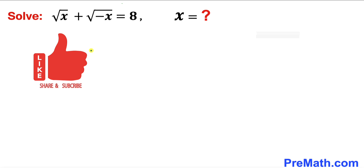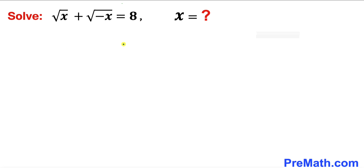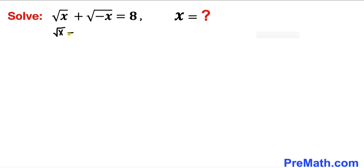Please don't forget to give a thumbs up and subscribe. So let's go ahead and get started with the solution. Here's our very first step: let me go ahead and move this square root of negative x to the right hand side. So therefore we are going to get square root of x equals to 8 minus square root of negative x on the right hand side.